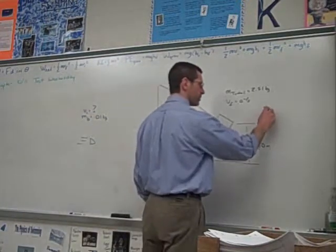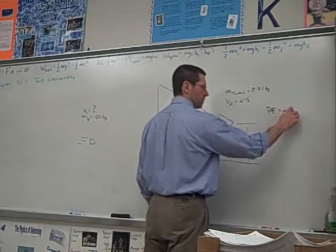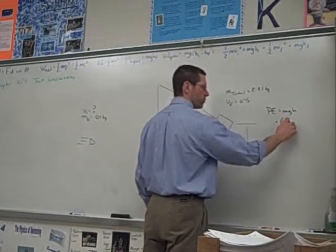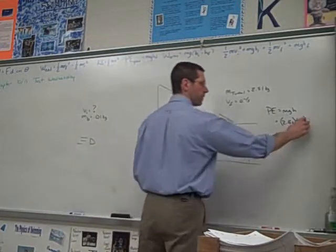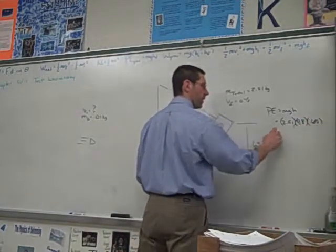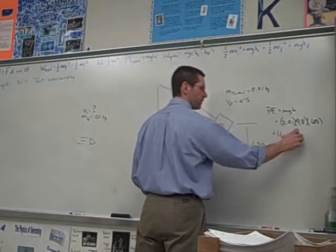And so if we calculate that potential energy, we got the total mass, 2.51 times g, times the height, 0.65. And that comes to 16 joules, roughly.